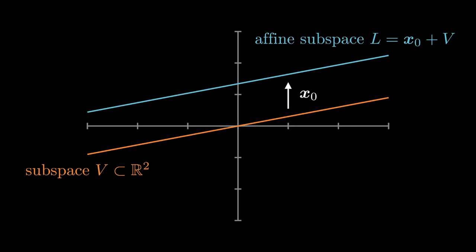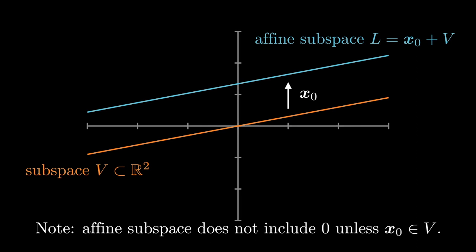Here the orange line represents a subspace of R2, and the blue line is an affine subspace that we get if we offset it with x0. The notation L equals x0 plus v indicates the set of vectors that can be explained by taking a member of v and adding x0 to it. It's important to note that the neutral element does not appear in an affine subspace unless the offset x0 happens to be in the original subspace.